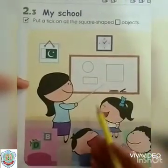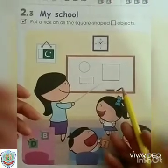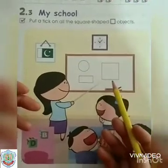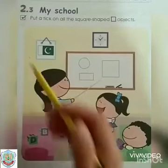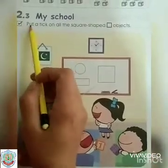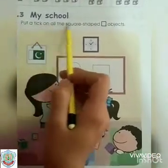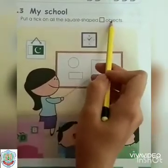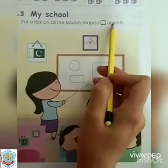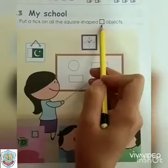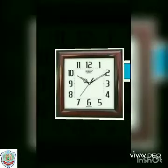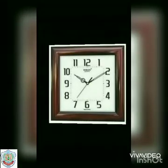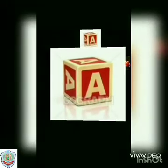Students, you can see many shapes in this room. Now let's move on to the next question: put a tick on all square shape objects. Do you know which shape this is? This is the shape of a square. The shape of this clock is also square, and the cubes and dice are also in the shape of a square.